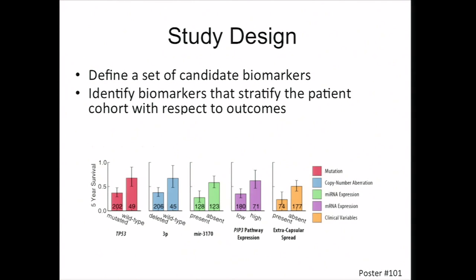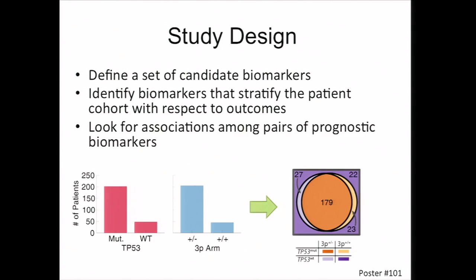After identifying these events, we ran a basic screen to find markers that correlated with patient outcomes, and we identified about 60 of these. We then looked for associations among pairs of these prognostic biomarkers. P53 is mutated in about 200 of these patients, and we have heterozygous loss of the 3P arm in another 200 patients as well. The overlap of these two events occurs in about 70 percent of our patient cohort, which is much higher than you would expect by the marginal probabilities.